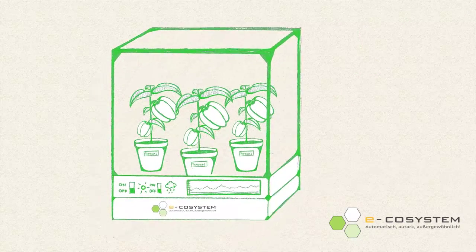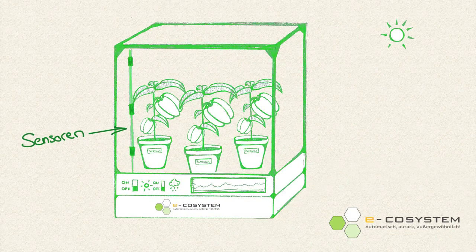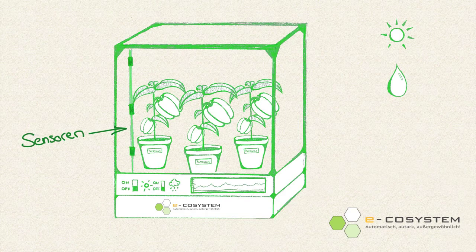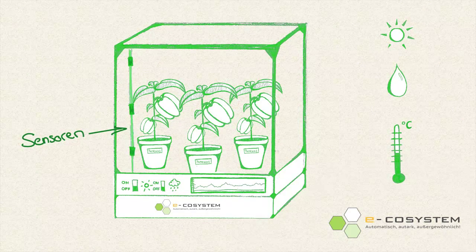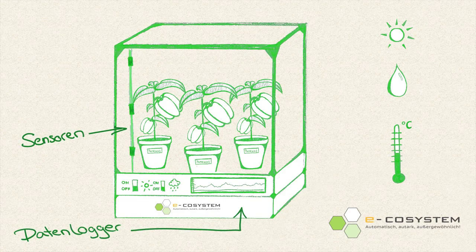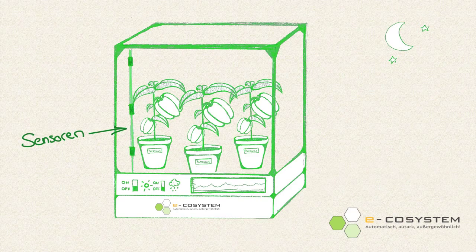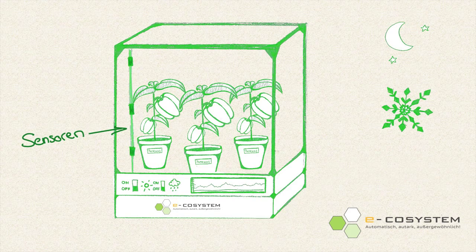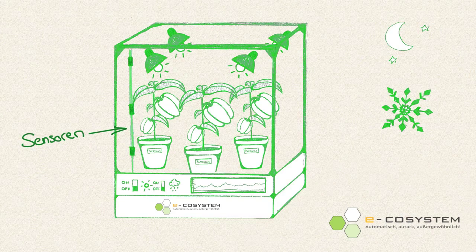Within the dome, sensor arrays are installed. They measure light intensity, humidity and temperature distribution inside the dome. These values are recorded and controlled. If it gets too dark or too cold, various light sources are switched on according to demand.